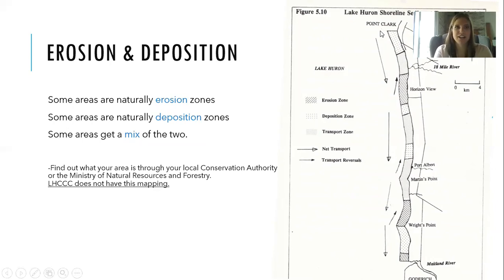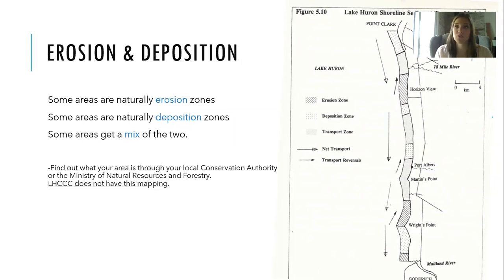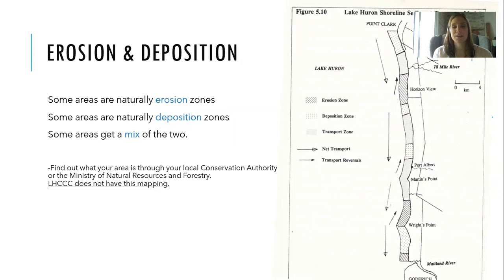This is an old image from the Point Clark to Goderich area showing that some areas are naturally erosion zones and others are naturally deposition zones. Erosion zones — marked with hash marks — are a lot of bluff areas and some beach areas where sediment gets taken away. Deposition zones are mostly beach areas or coastal wetlands. Some areas are a mix or transport zones. It's important, if you live along the coast, to figure out what type of zone you live in. You can find this information through your local conservation authority or the Ministry of Natural Resources and Forestry, which will help you determine the best management practices for your shoreline.